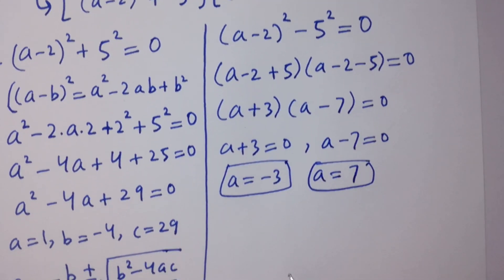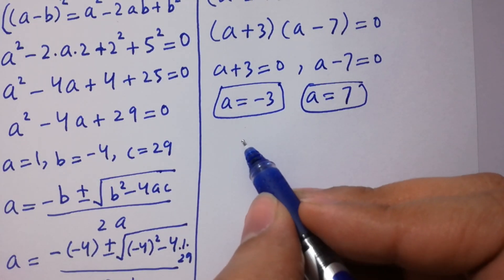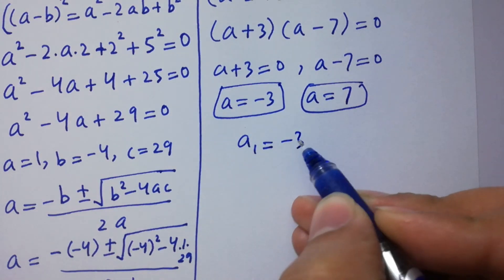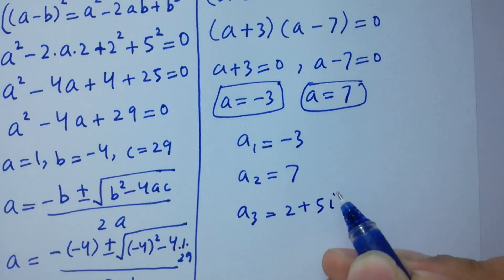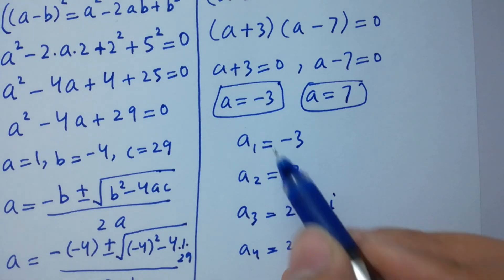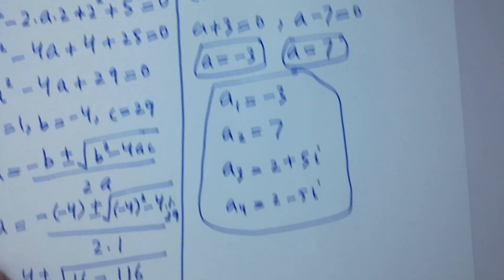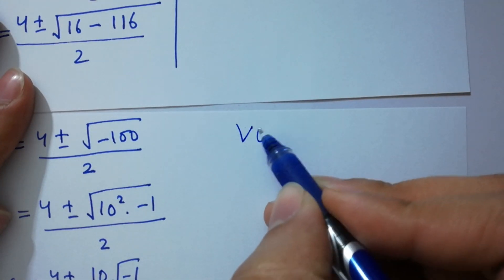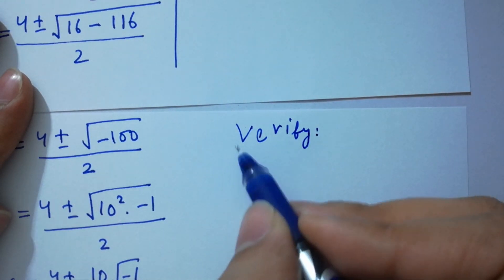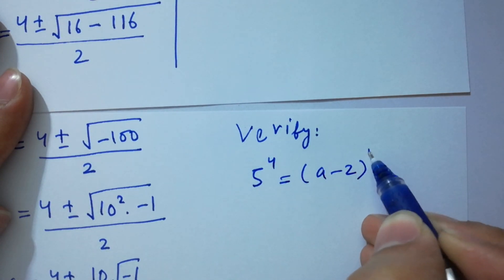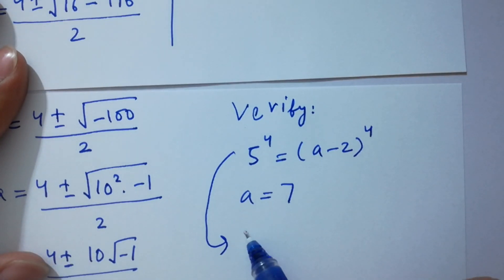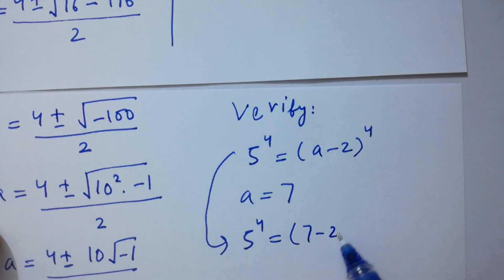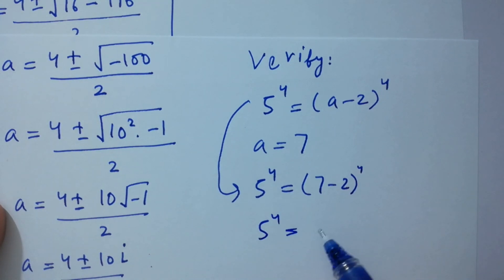So we have two real solutions and four solutions in total: a1 is minus 3, a2 is 7, a3 is 2 plus 5i, and a4 is 2 minus 5i. To verify: putting a equals 7, we get 5 to the power 4 equals (7 minus 2) to the power 4, which is 5 to the power 4. Verified.